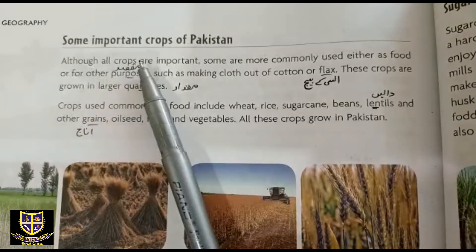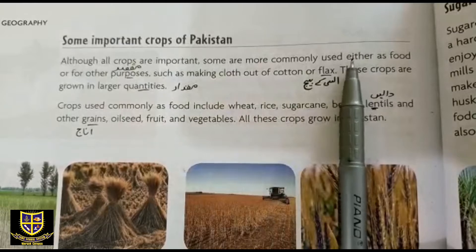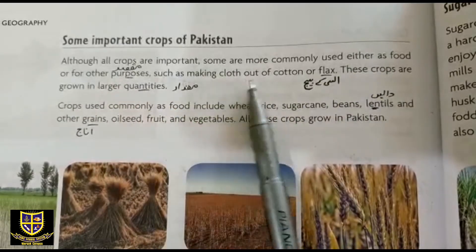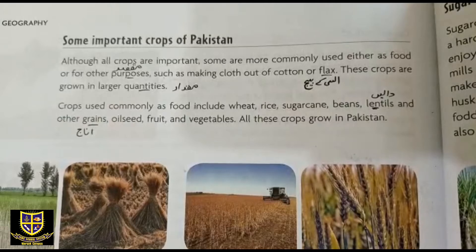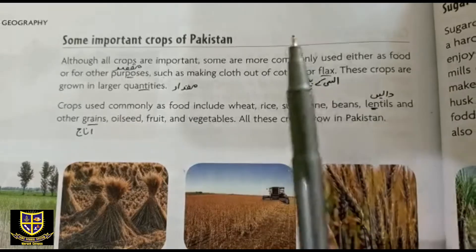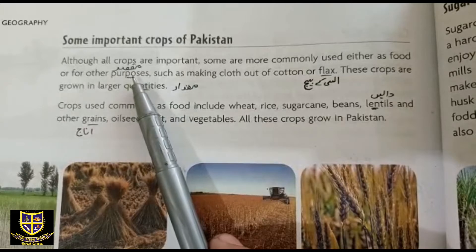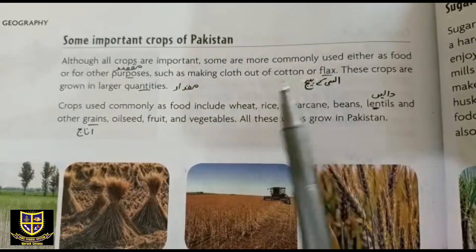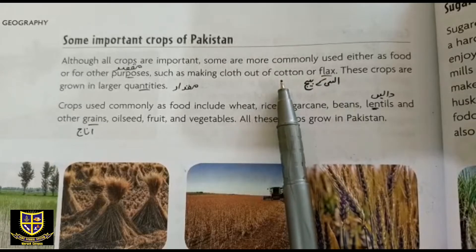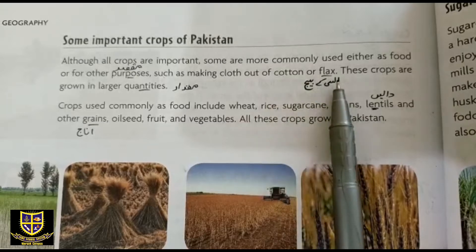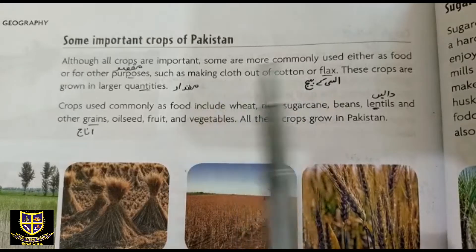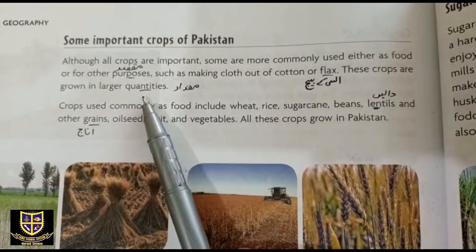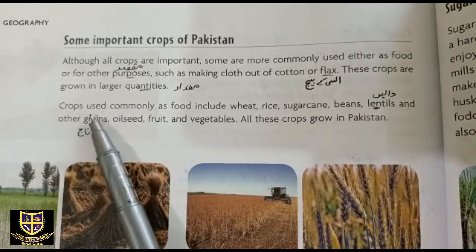Although all crops are important, some are more commonly used either as food or for other purposes, such as making cloth out of cotton or flax. یعنی ساری فصلیں ضروری ہوتی ہیں — بعض خوراک کے طور پر استعمال ہوتی ہیں اور بعض کپڑا بنانے کے لئے جیسے کپاس اور السی۔ These crops are grown in large quantities — یہ والی فصلیں ہمارے ملک میں بہت بڑی مقدار میں پائی جاتی ہیں۔